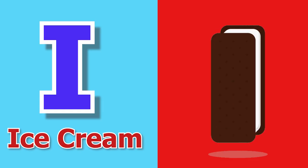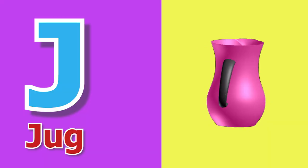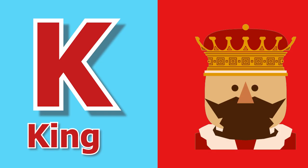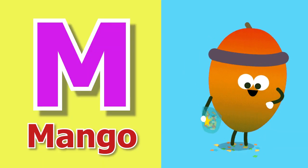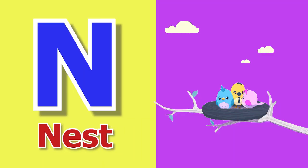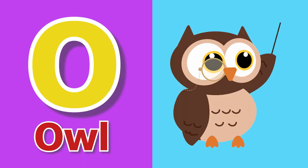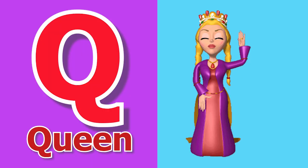I for Ice Cream, J for Jug, K for King, L for Lamb, M for Mango, N for Nest, O for Owl, P for Peacock, Q for Queen.